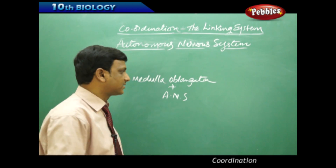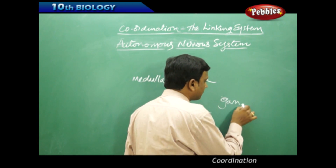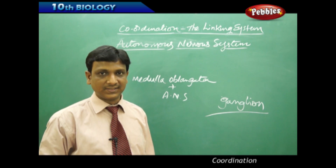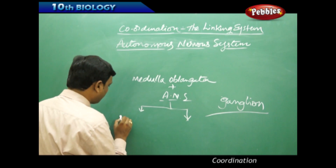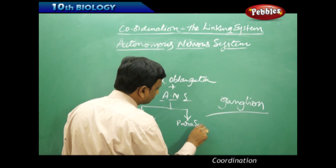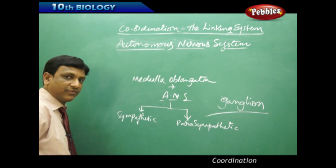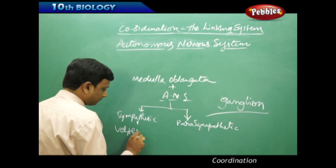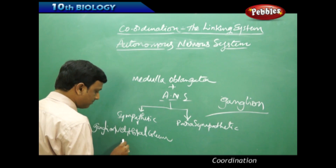Near the spinal cord, on the ventral and dorsal side, we find groups of nerve cells called ganglia, from which pairs of nerves arise. The autonomic nervous system is comprised of the sympathetic nervous system and the parasympathetic nervous system. The sympathetic nervous system is made up of nerves arising from the ganglia on the other side of the vertebral column, plus association neurons.